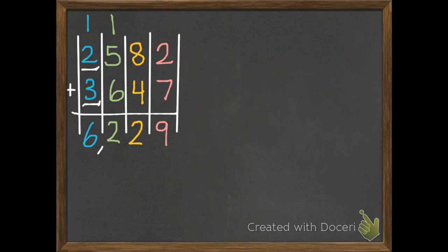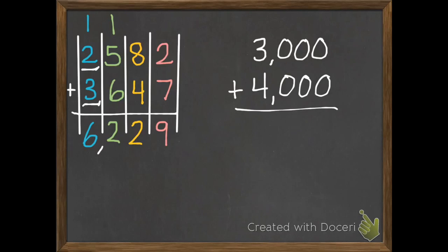So two thousand five hundred eighty-two becomes three thousand. And three thousand six hundred forty-seven becomes four thousand. Add these I get seven thousand. So my answer, my sum of six thousand two hundred twenty-nine is close to seven thousand. So I'd say that is pretty reasonable. So I'm done with that example.